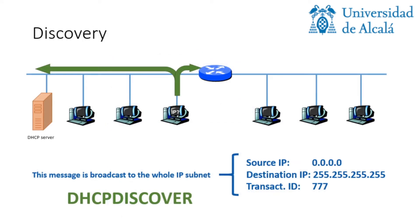The discovery phase is characterized by the DHCP discover message, which has the following format. The source IP is 0.0.0.0 because we don't have an IP yet. And the destination IP is the broadcast address, because it needs to reach all hosts in the subnet. Apart from that, we have a transaction ID.